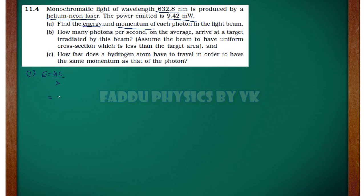Energy equals H value is 6.63 into 10 to the power minus 34 into C value 3 into 10 to the power 8 and lambda which we have given is 632.8 nanometer 10 to the power minus 9. This will be your energy.